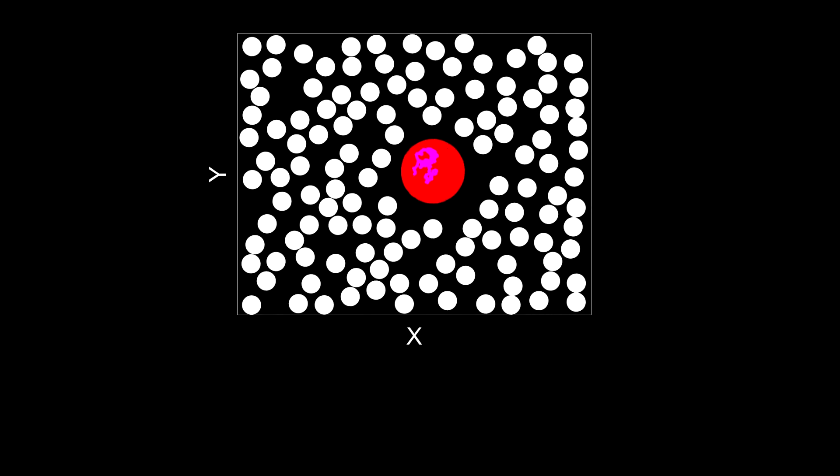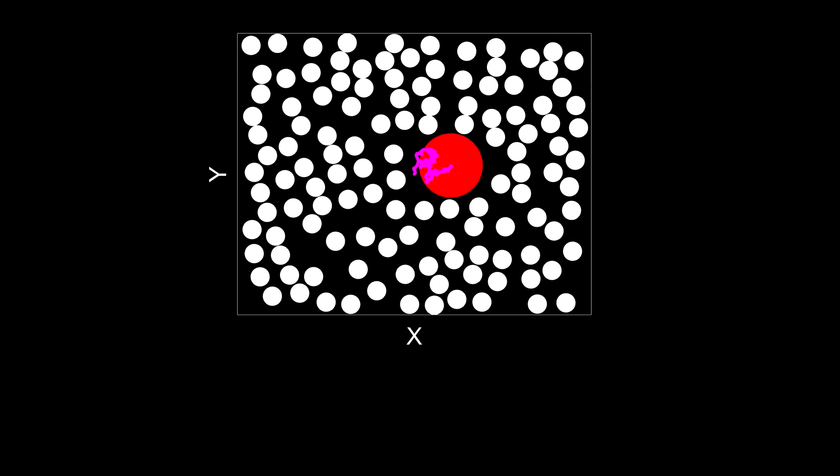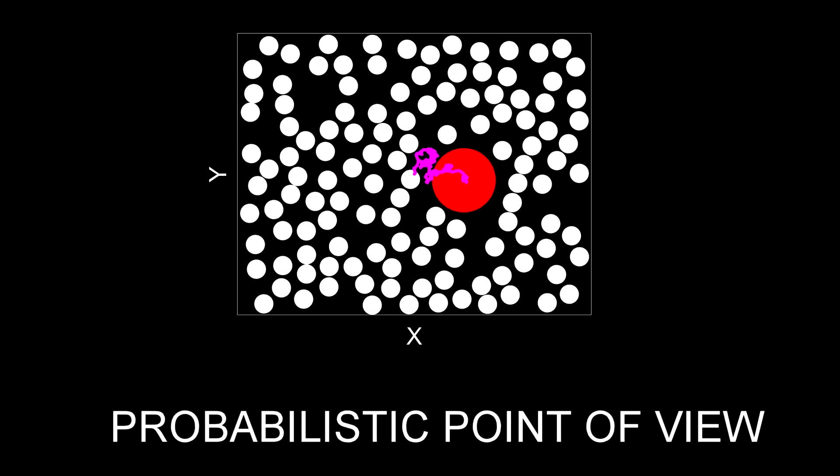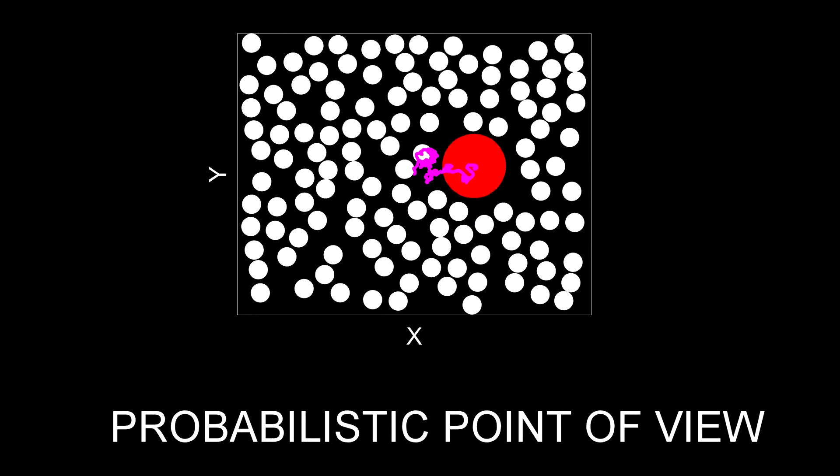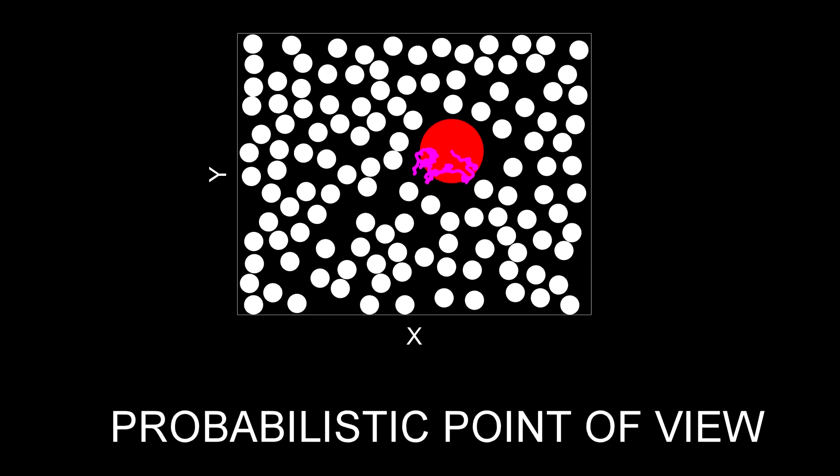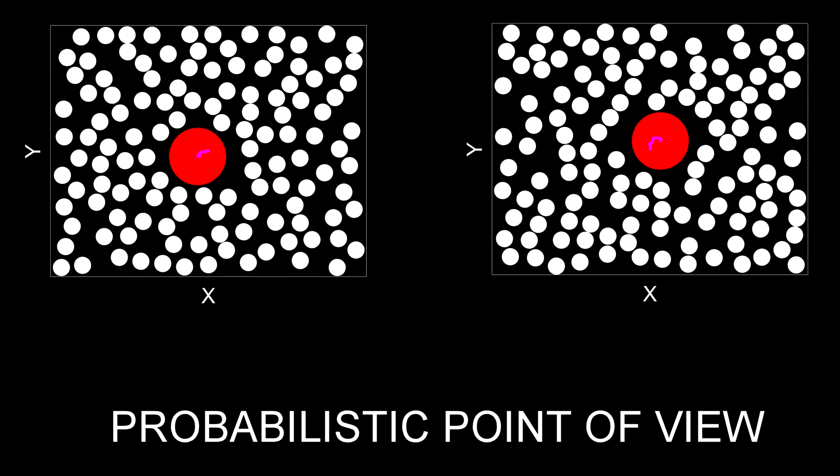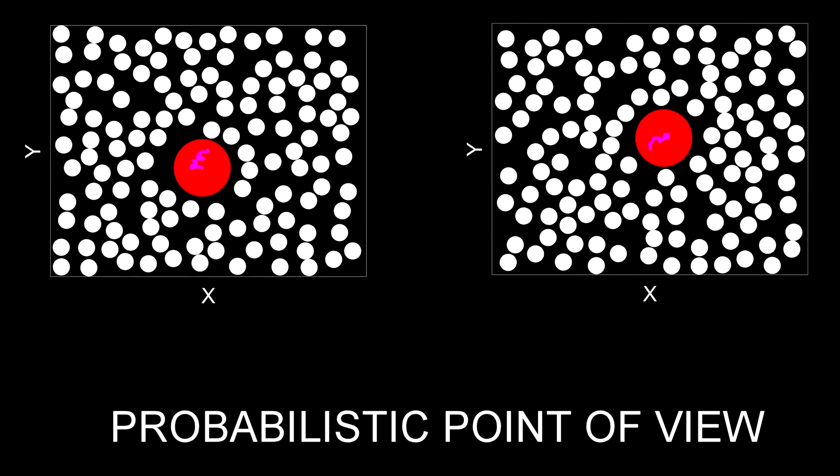The first thing that we want to do is to tackle this problem from a probabilistic point of view. Indeed, if we repeat the previous experiment many times, we will find out that the red ball will follow a different trajectory every time.